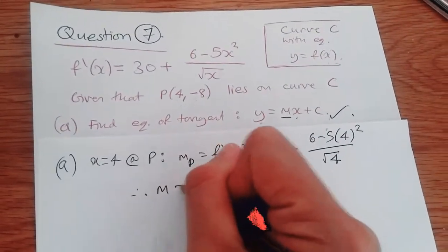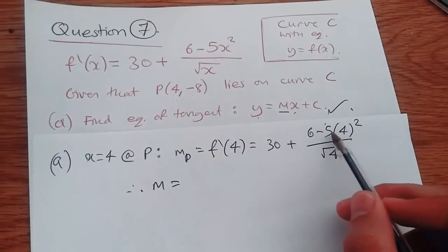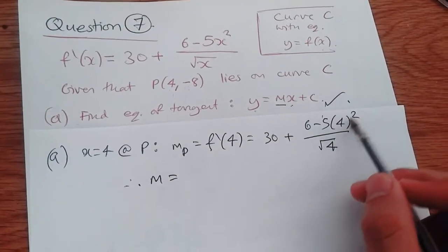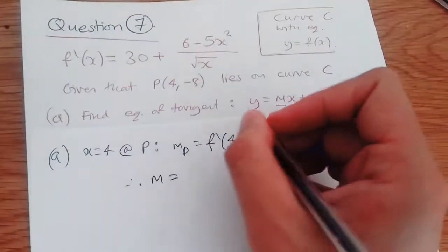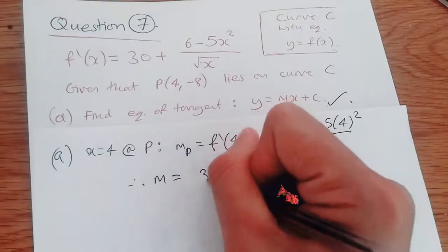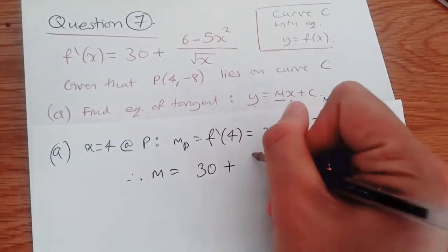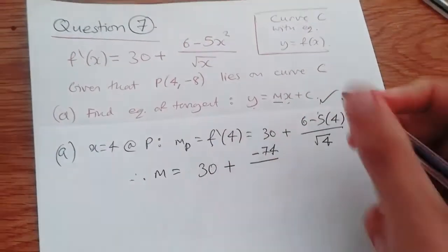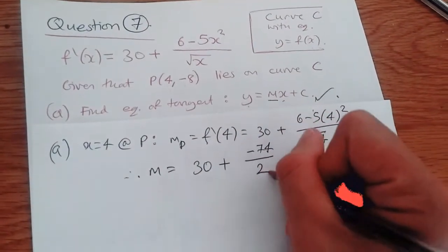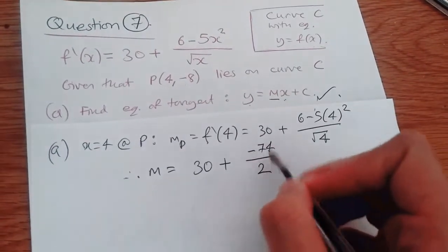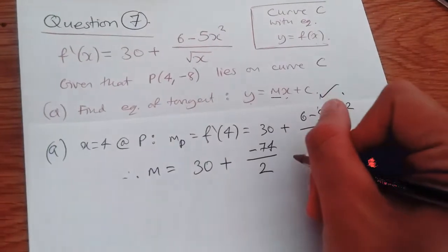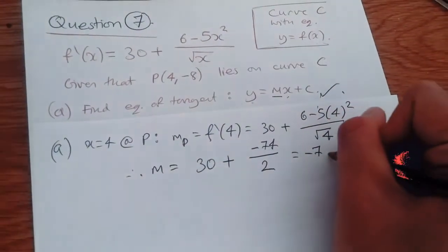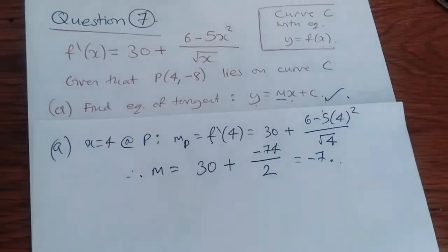So the gradient m, what's it going to be? So this part, we've got 5 times 4². 4² is 16, 16 times 5 is 80. 6 take away 80 is minus 74. So we have 30 plus minus 74 over all, square root of 4 is 2. Now simplifying this part, half of minus 74 is minus 37, and then adding it to 30 will give us minus 7. Good, and that's it.